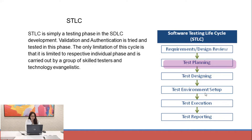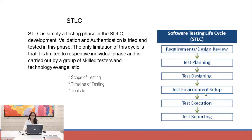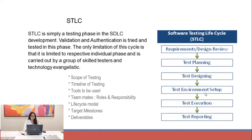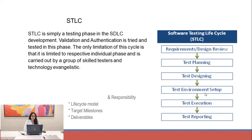The next phase is test planning. Test planning is majorly about creating a document called the test plan. This document contains different elements including: scope of testing, timeline of testing, tools which will be used, teammates and their roles, life cycle models to be followed, milestones, and test deliverables — for example, the requirement traceability matrix, test case document, and test report.